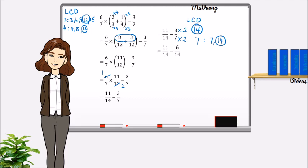So now we do the numerators. 11 minus 6 is 5. And that's our answer.